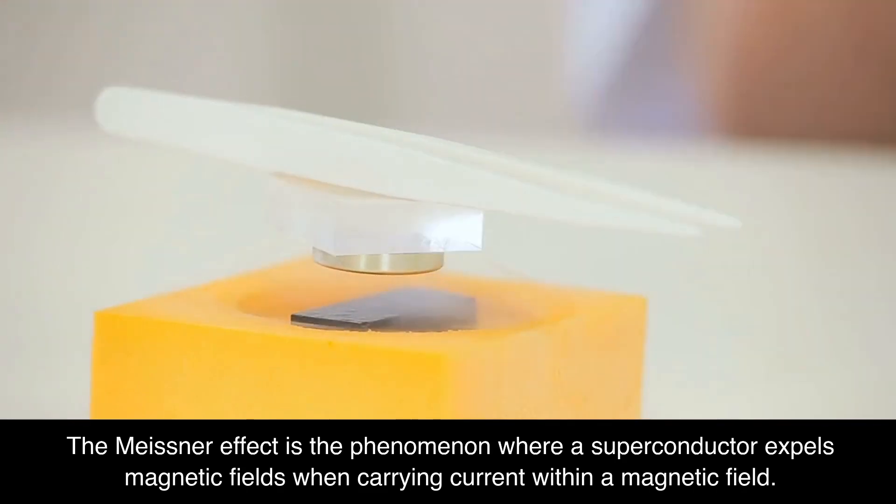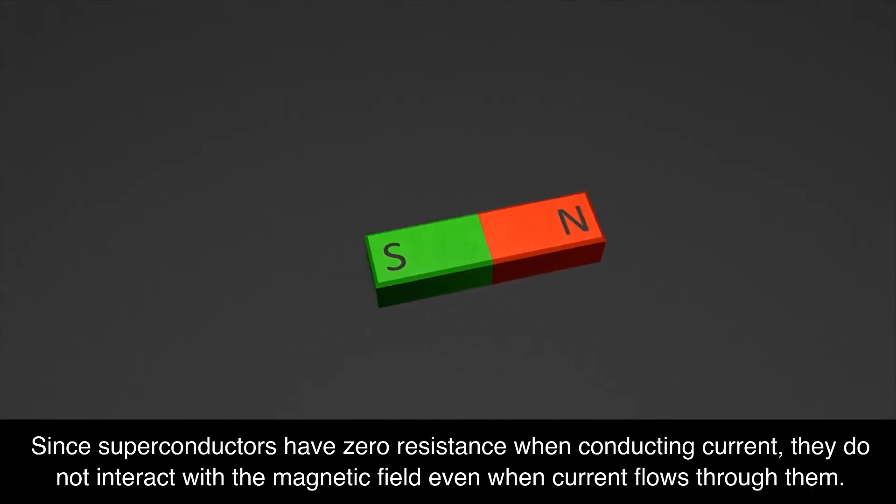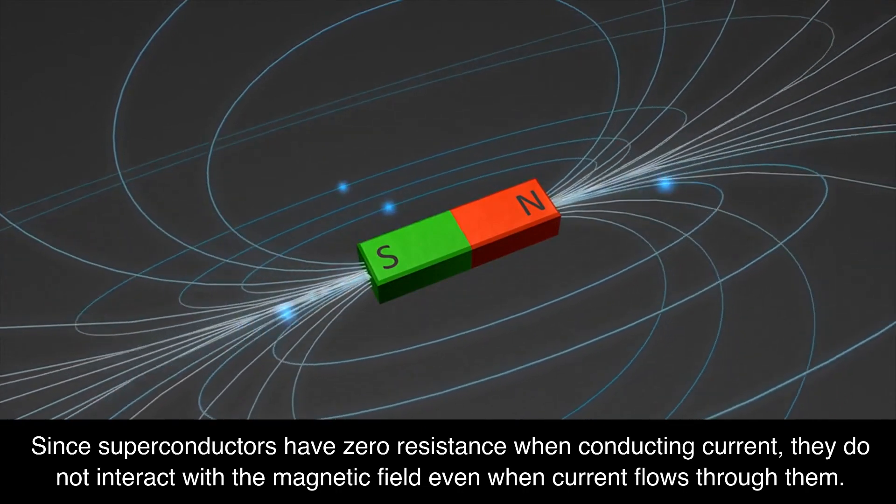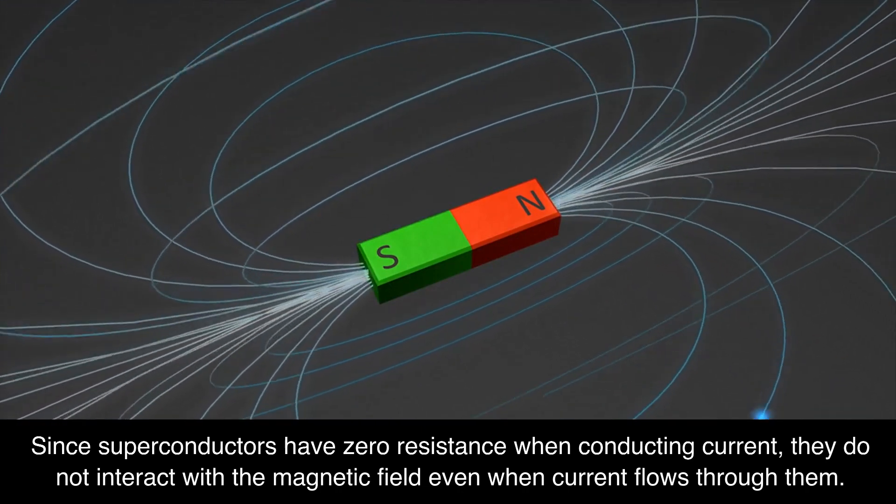The Meissner effect is the phenomenon where a superconductor expels magnetic fields when carrying current within a magnetic field. Since superconductors have zero resistance when conducting current, they do not interact with the magnetic field even when current flows through them.